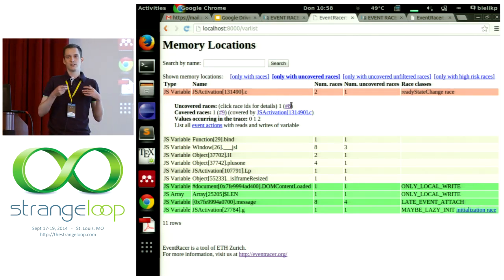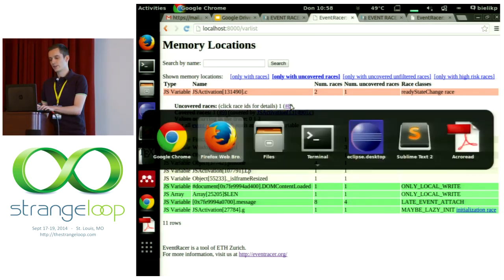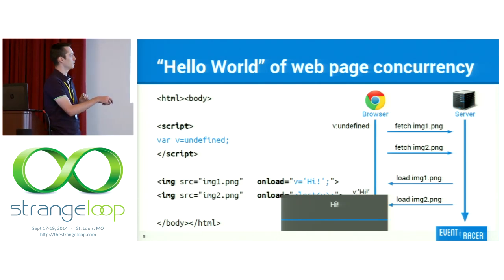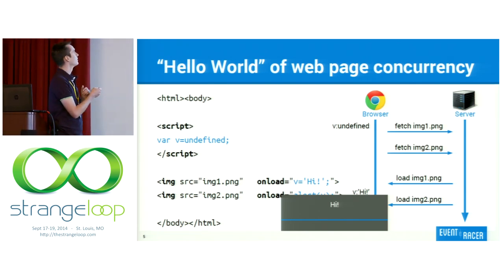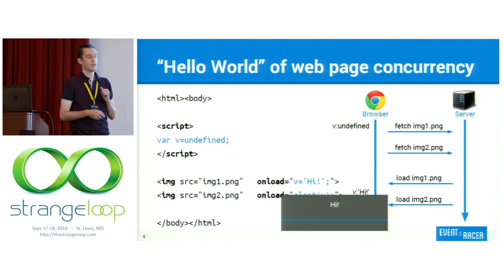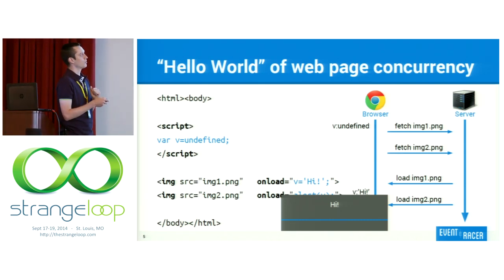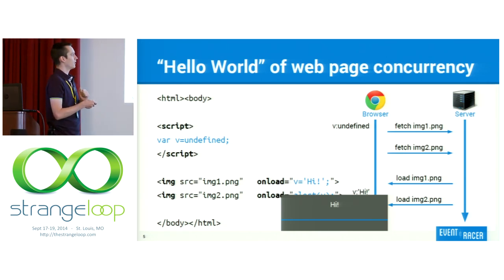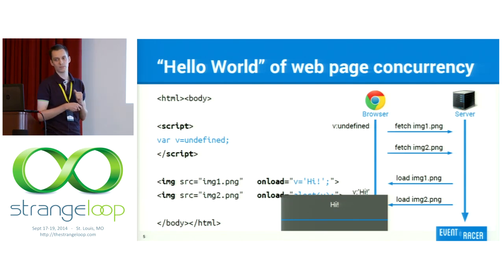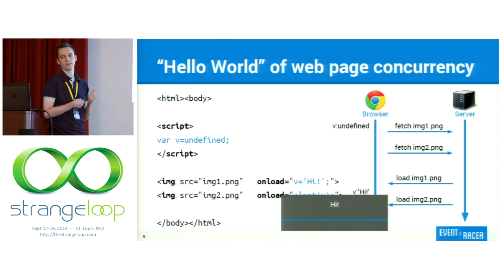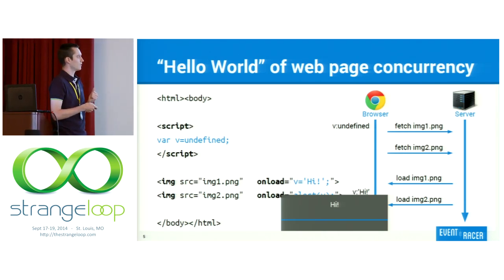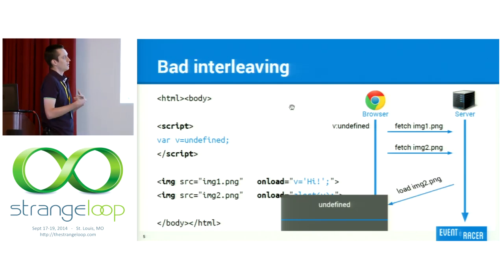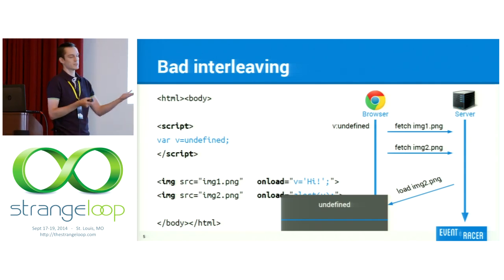Before going further, let's have a simple example which demonstrates how these concurrency errors actually arise. The application: when it loads, we set the value of variable v to undefined, and then we want to load two images. The browser issues two requests, and as you would expect, the server responds by loading the first image. When this happens, the onload callback is executed and we set this variable v to the value 'hi'. Then the second image is loaded and this second onload handler is executed, and we show the value of v to the user.